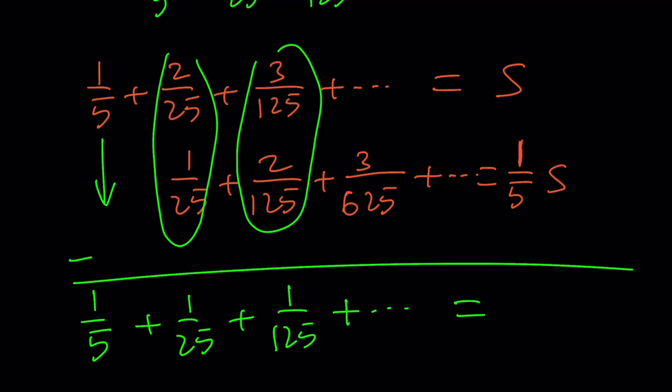And on the right-hand side, 1 minus 1 fifth is going to be 4 over 5 multiplied by S. Great.